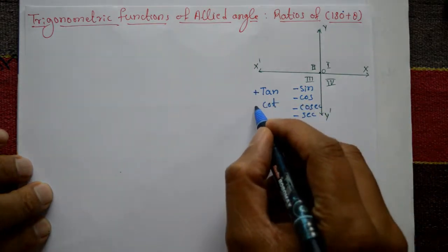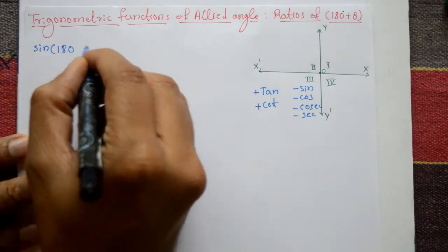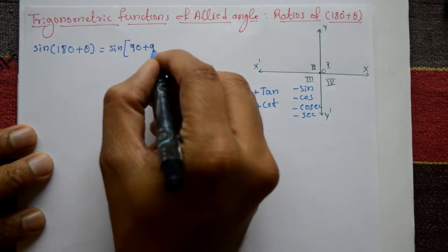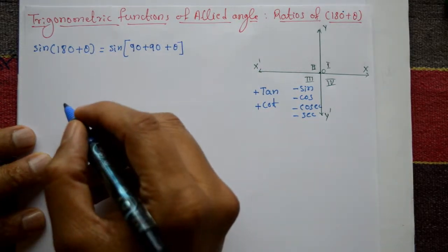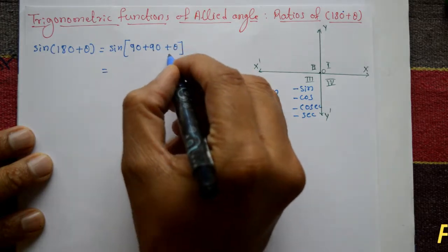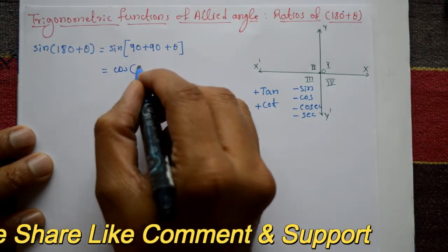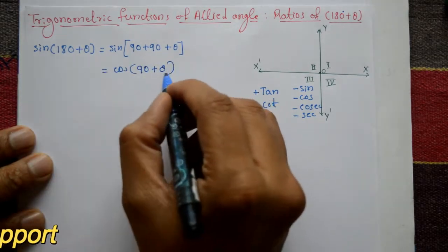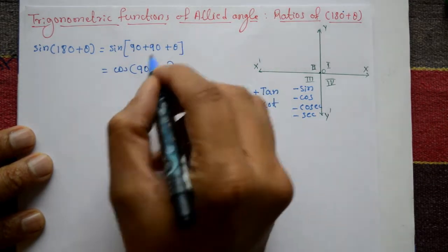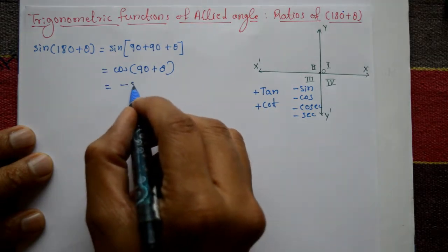Only tan and cot ratios are positive. Now let us find sin(180° + θ). This equals sin(90° + 90° + θ). We apply sin(90° + θ) = cos θ, so sin(90° + (90° + θ)) = cos(90° + θ), and cos(90° + θ) = −sin θ. So sin(180° + θ) = −sin θ.